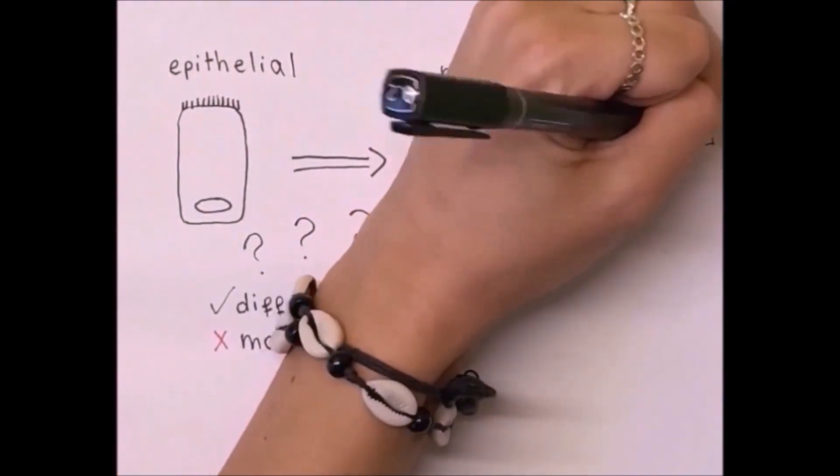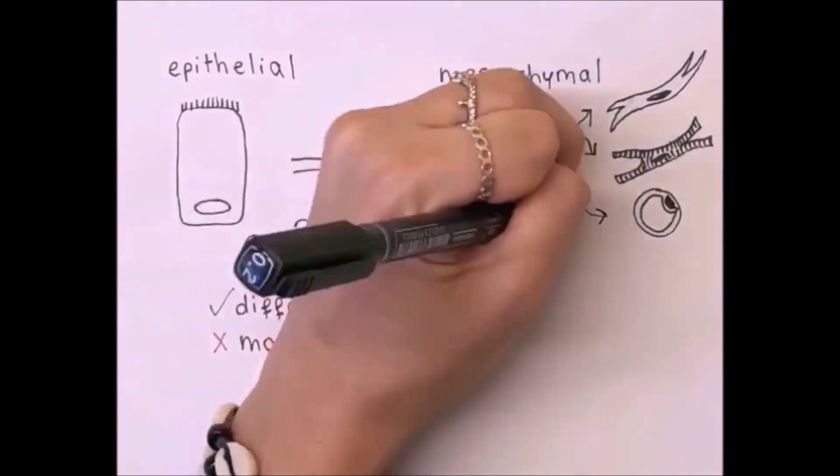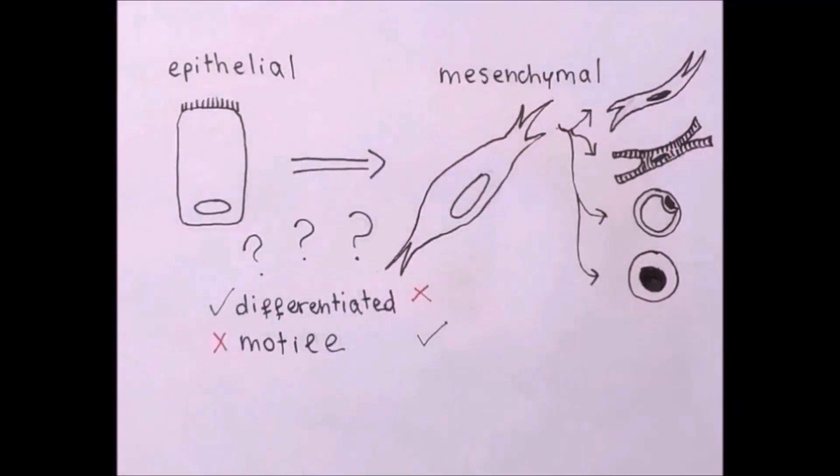Mesenchymal cells, instead, can move throughout the organism, and since they have a more fluid morphology, they are able to differentiate into other cells, such as fibroblasts, myocytes, adipocytes, or chondrocytes.